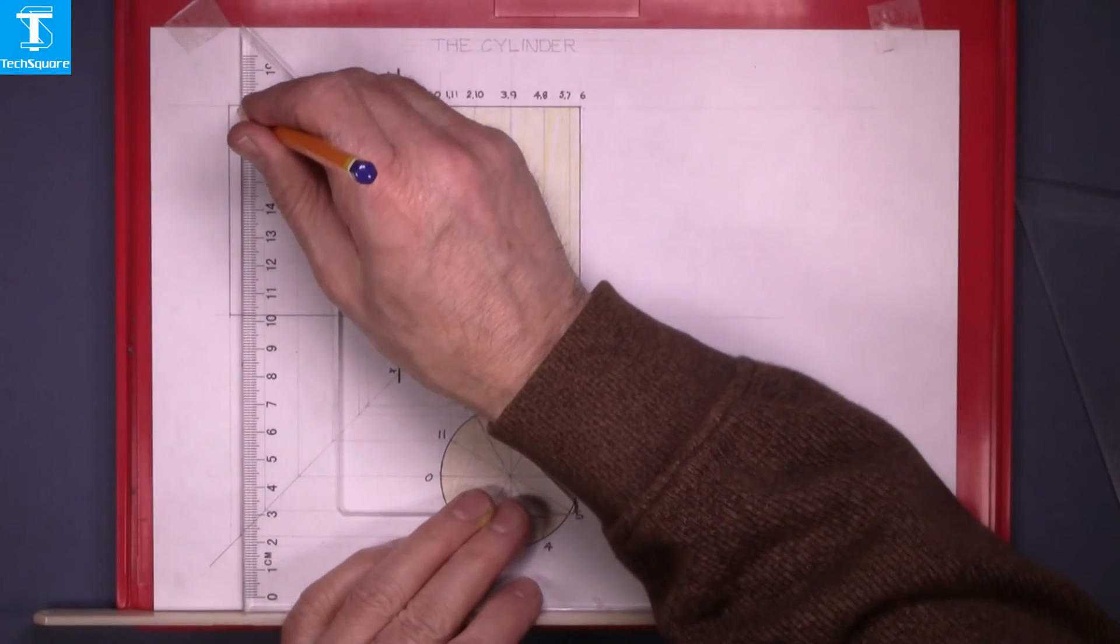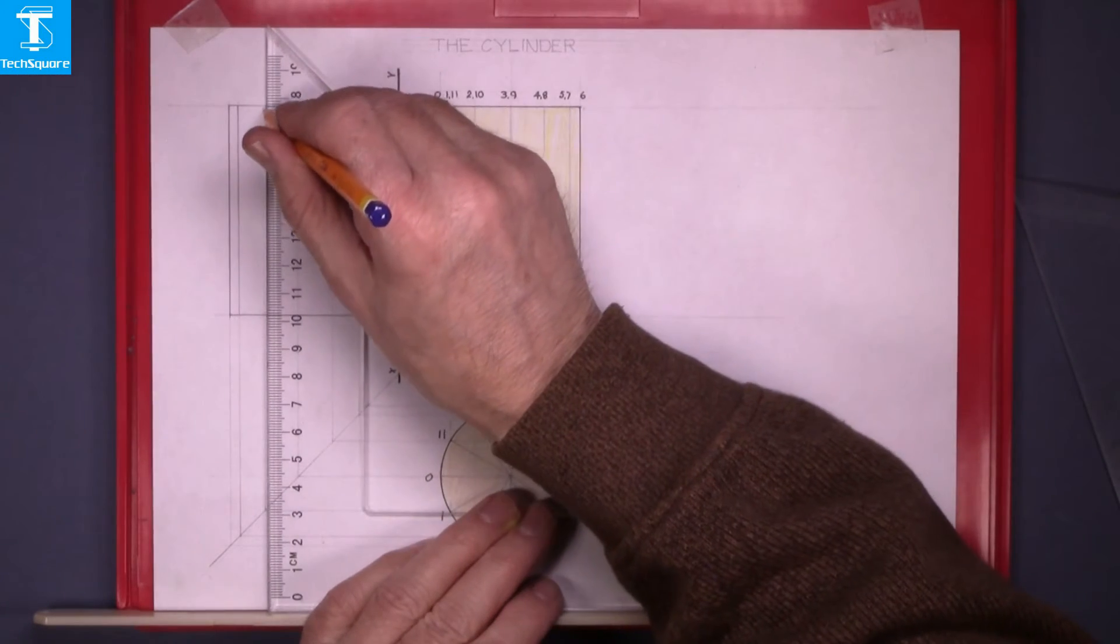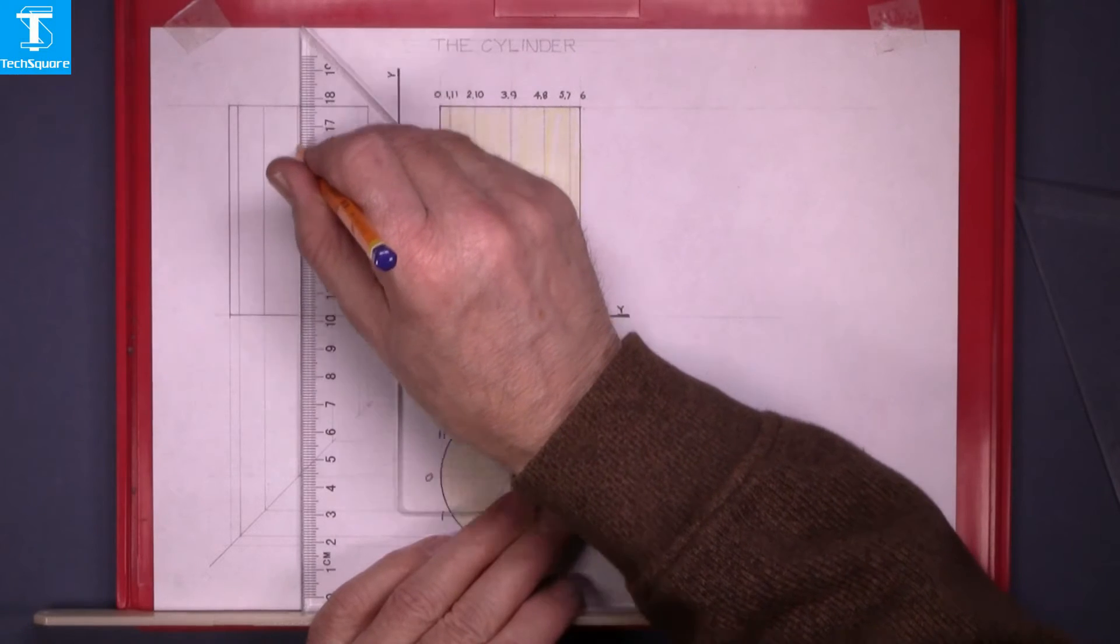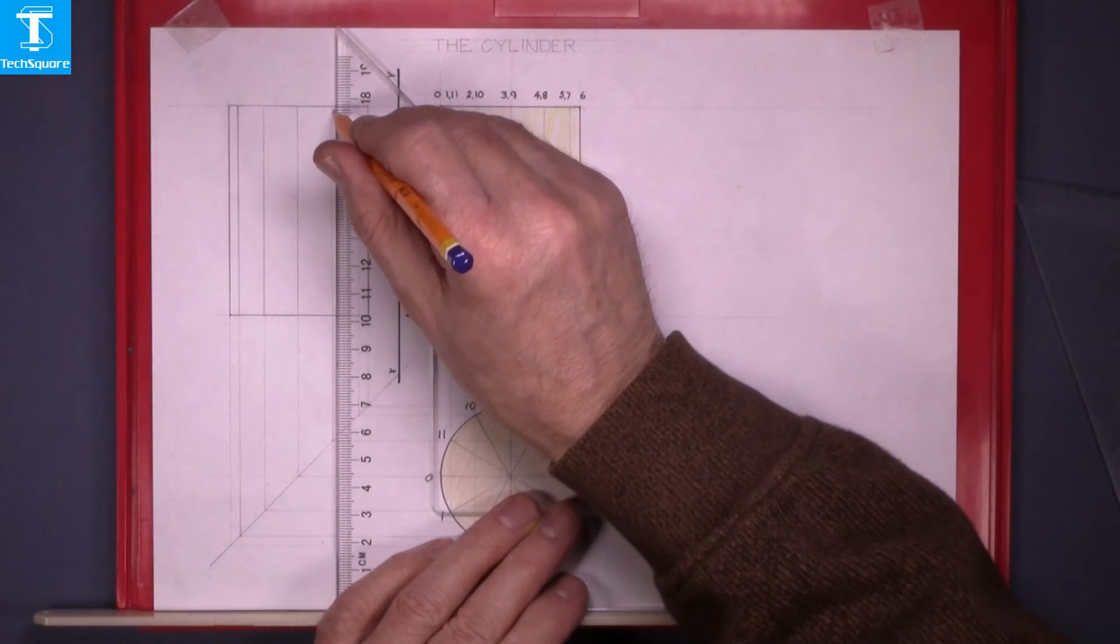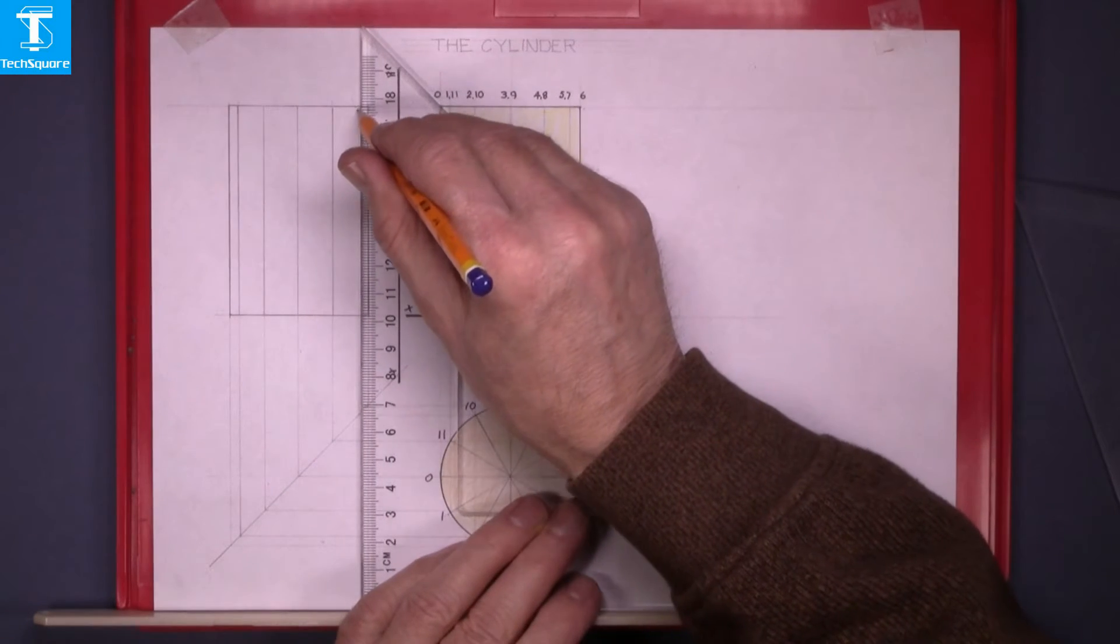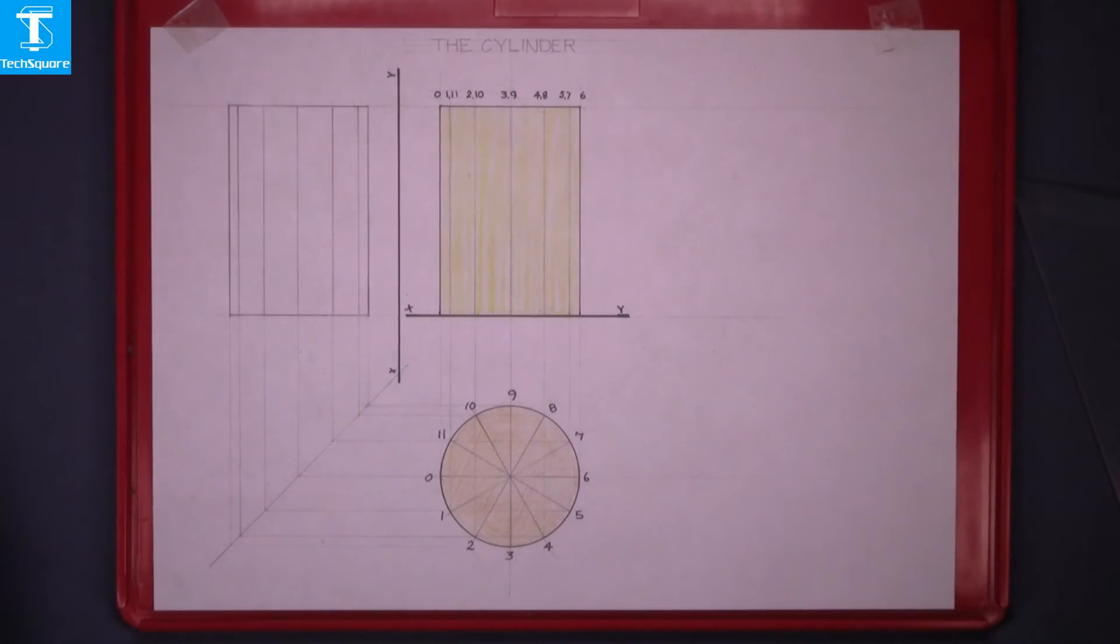Now to draw in the generators on the surface. These are the 12 sections that the cylinder is divided up into. That's that complete.